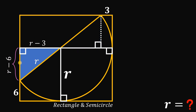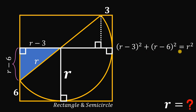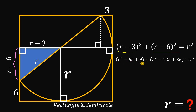Now let's focus on this right triangle, because using it we can solve for the value of r using the Pythagorean theorem. We have (r minus 3)² plus (r minus 6)² equals r². Expanding these terms gives r² minus 6r plus 9 plus r² minus 12r plus 36.